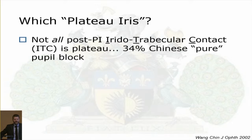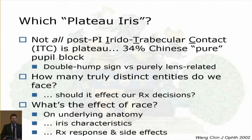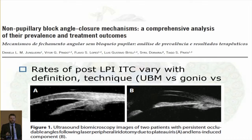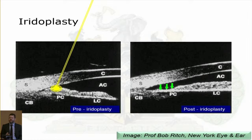Not all iridotrabecular contact is pure plateau configuration. We need to look for a double hump sign on gonioscopy. With rates of 25–30% of patients still having some degree of closure despite an iridotomy, there is a real risk of over-treating patients. Although historically, Bob Rich in the 90s was treating everyone with iridotrabecular contact, we've moved away from that now.